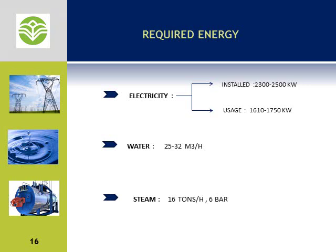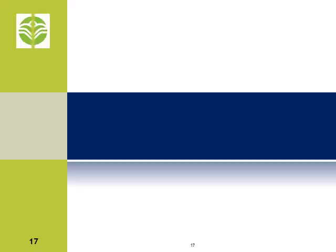As you can see on your screen, the required installed electricity is about 2500 kilowatts. Required water is about 30 cubic meters per hour. Required steam is around 16 tons per hour. Required leveled land is about 25,000 square meters.